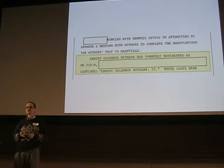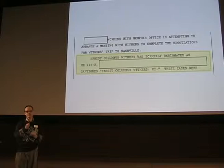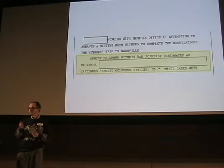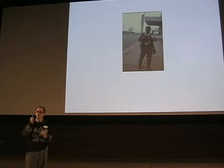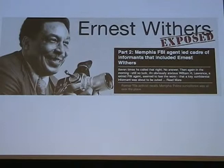The more dangerous part of this is when governments try to keep people's identities secret and they fail to redact properly. Poor Ernest Columbus Withers used to have two FBI files, and they leaked his code number. That was enough for reporters to match that up with thousands of other pages of FBI files that had been released and to expose this photographer — who was a civil rights photographer — as an FBI informant.